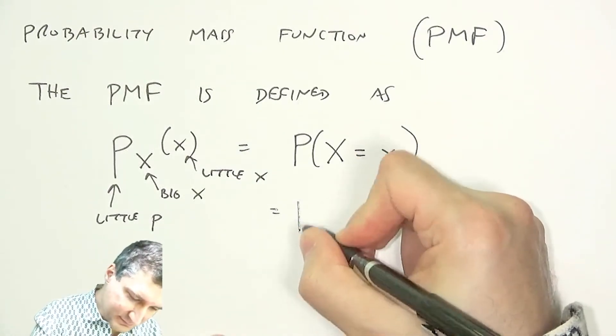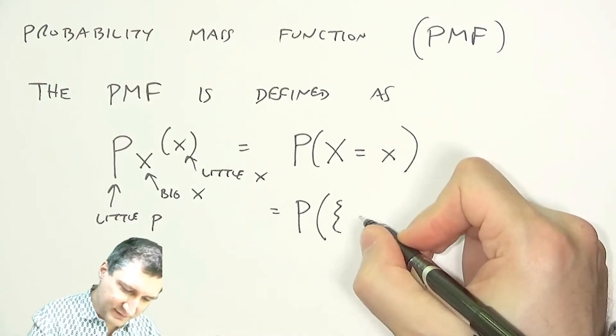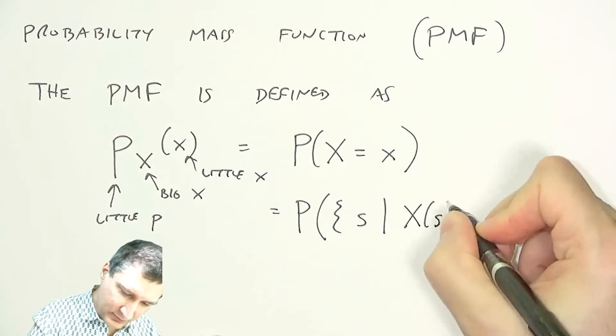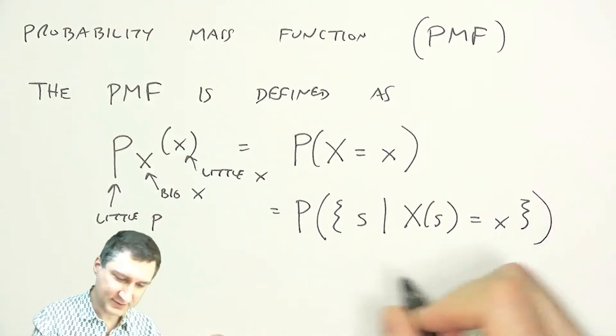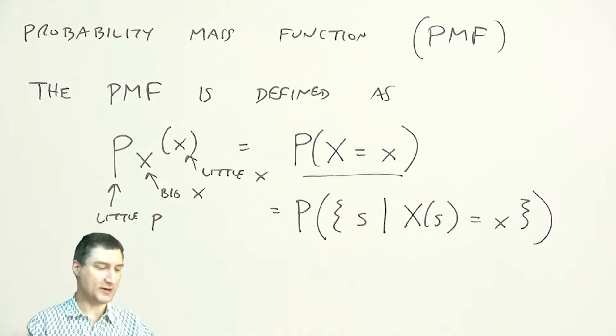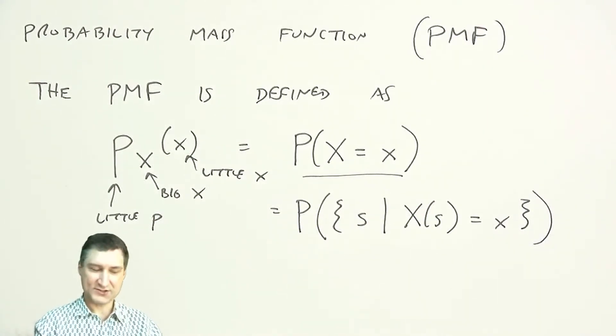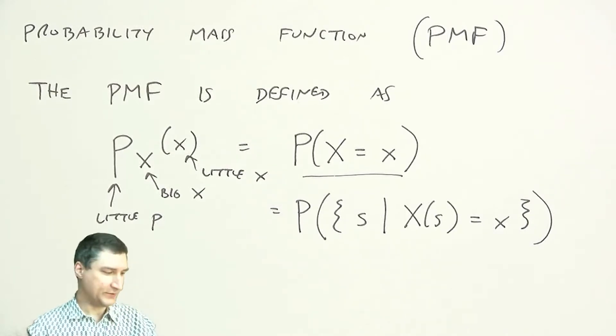Or to be really pedantic, it's like saying it's the probability of the set of outcomes in the sample space such that when I map those outcomes, I get the value x. This is the smarter way to think about it here. And so, since x is a discrete random variable, this PMF is only non-zero at a discrete set of places along the real line.